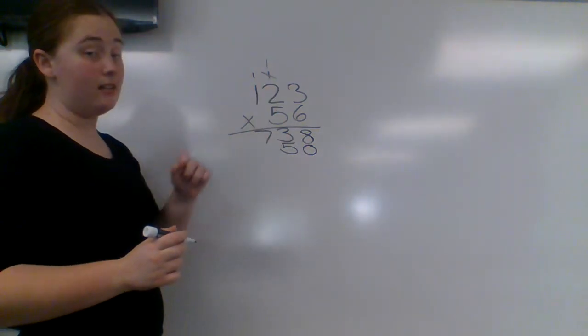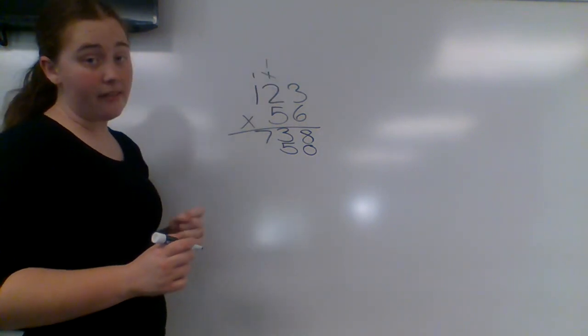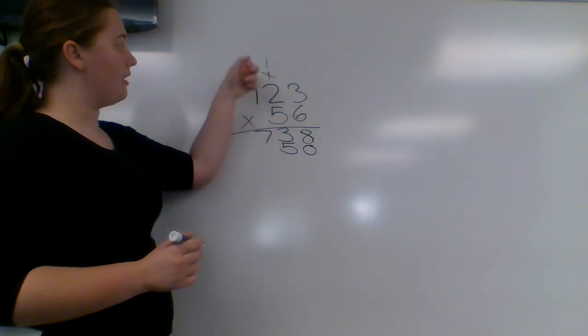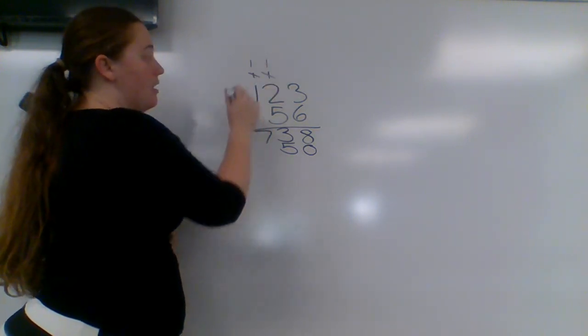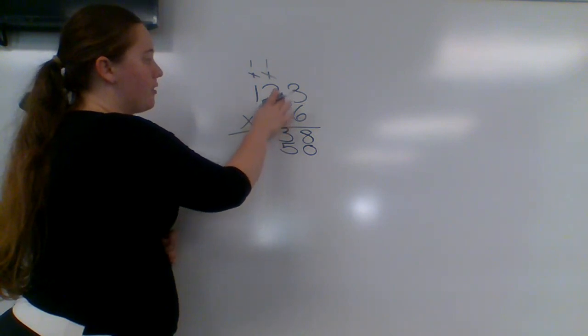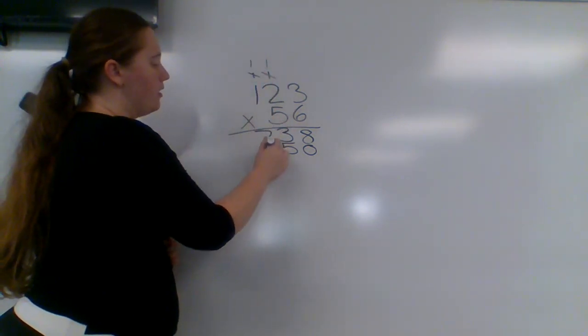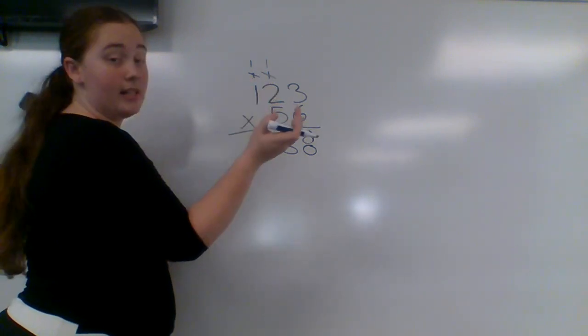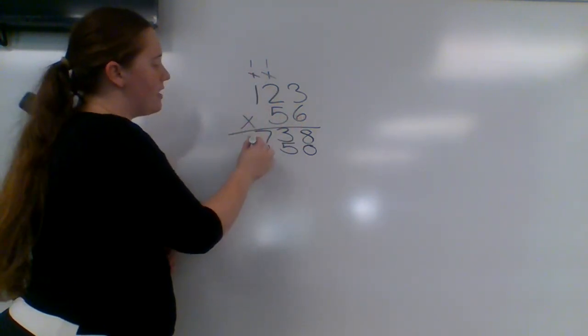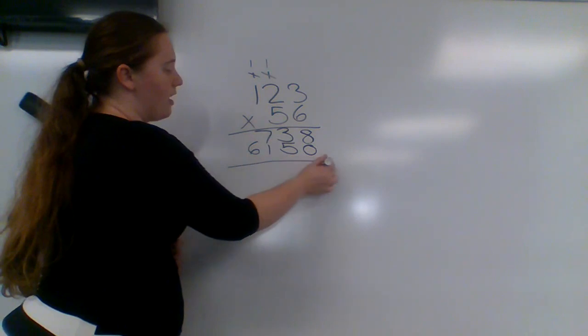5 times 2 is 10, plus the 1 is 11. So we're going to carry the 1 up here. Cross the 1 out and write 1 above it. So 5 times 2 is 11. Carry the 1. 1 gets written down here. And then 5 times 1 is 5, plus 1 is 6.